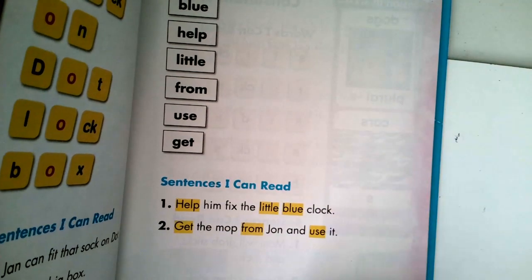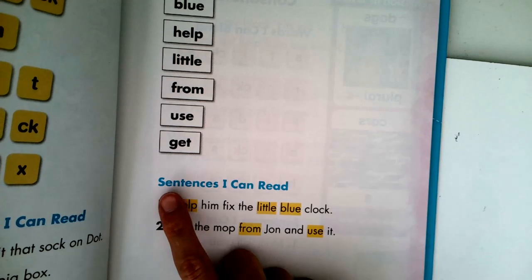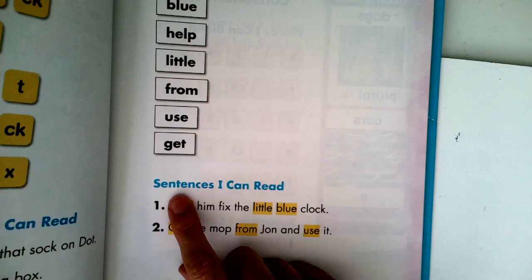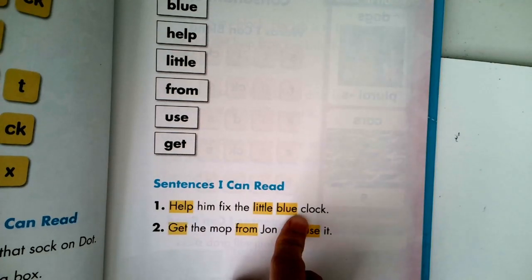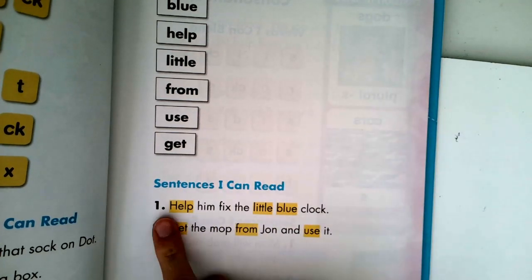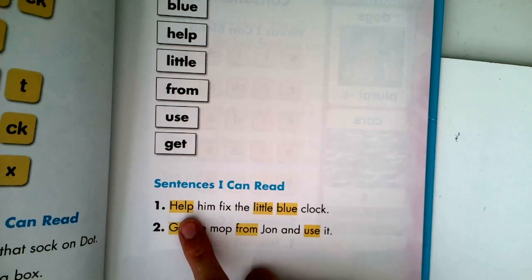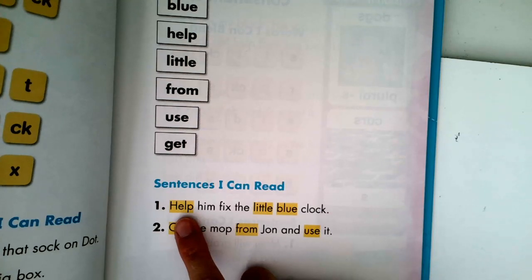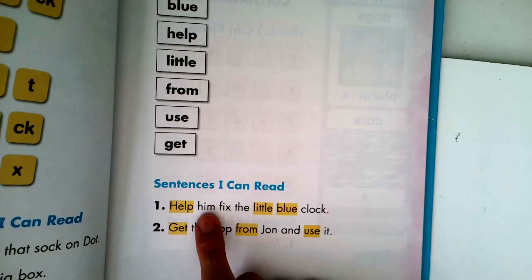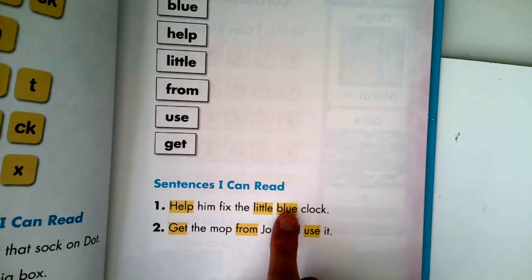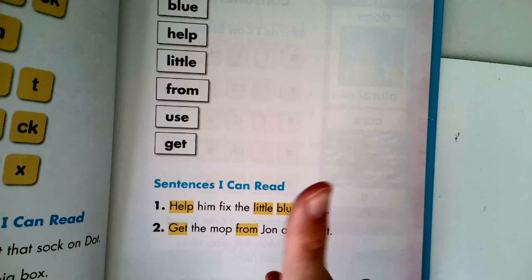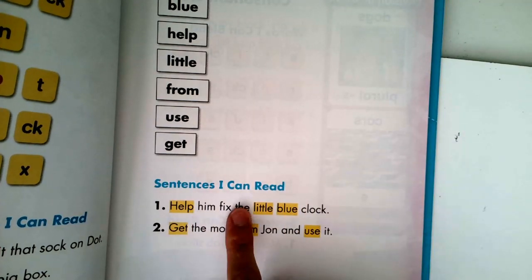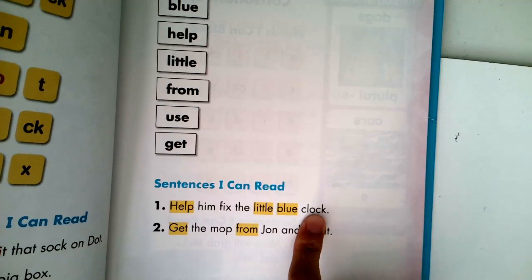Alright, let's look at these sentences at the bottom now. Just like when we practice reading our phonics words, we are also going to do some sentences that help with our sight words. So, go ahead and take a peek at the first sentence. Whisper it to yourself if you need to. Here we go. Let's read it together. Help him fix the little blue clock. Go ahead and get that reading finger if you didn't already have it and let's do that one again. Help him fix the little blue clock. Good work.